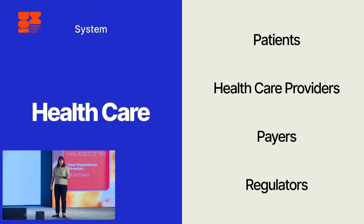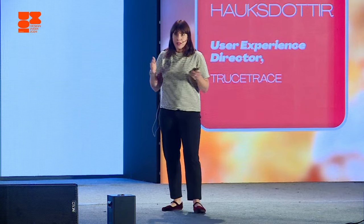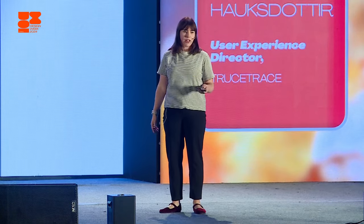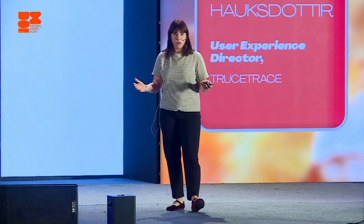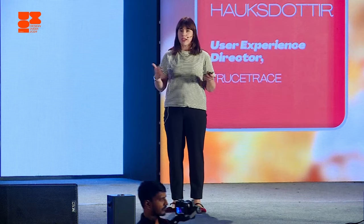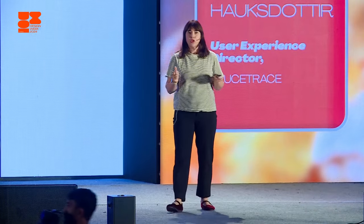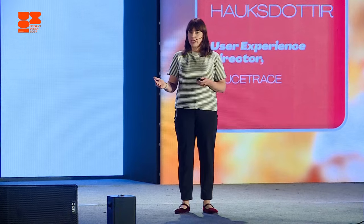Let's look at a system example — healthcare. We've already mentioned a little bit about healthcare earlier this morning. In terms of a system, we have patients, healthcare providers, payers and regulators. This is quite complex. What is broken inside of healthcare? I think many of us can agree that access to healthcare can be a problem. It can be that you live too far away from help, the lines are too long, or you can't afford it. Or, like in this example, access to medicine is not available to you. What they're protesting against here is that diabetes medicine became trendy for weight loss, so people started buying it in bulk and removing access from those who actually needed it to survive.